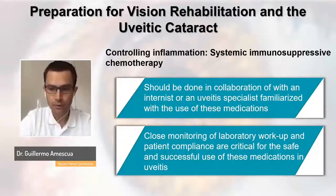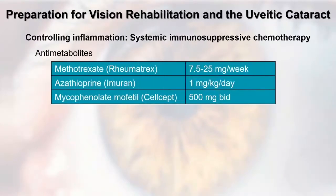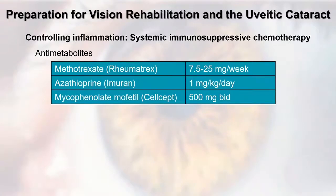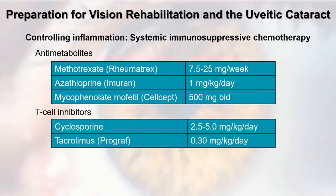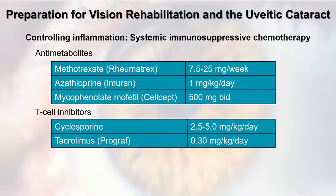The immunosuppressive medications we'll review briefly are very safe when used responsibly. Published manuscripts show that with responsible use, the risk of developing cancer is the same as in the general population — a very common question from adult patients. We perform age-appropriate oncological screenings and then feel comfortable starting these medications. As ocular surface specialists, we most commonly use anti-metabolites, which in my practice control about 80% of inflammatory conditions. These medications work quite well and can be well tolerated.